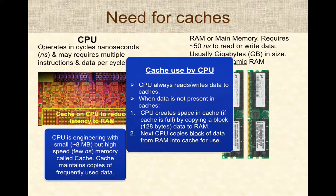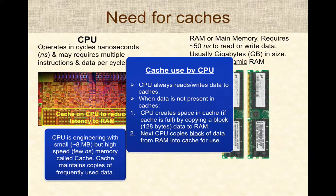Caches are used by the CPU for all reads and write operations associated with processing instructions. When a piece of data or instruction is not present in a cache, the CPU first creates space in the cache — if the cache is full — by copying a block of data to RAM, then fetches the necessary block from memory into the cache, and uses the data for further operations.